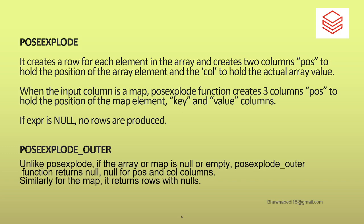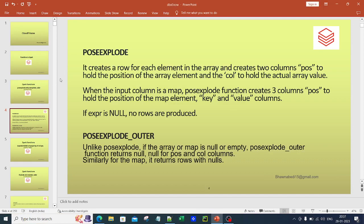In posexplode, if any expression is null — if you have no data — then it ignores it, just like explode. When you come to posexplode_outer, the functioning is similar to posexplode. Everything is the same, except that posexplode_outer keeps your null values. That is the only difference. posexplode essentially removes nulls and does not give you nulls in the output, but posexplode_outer considers nulls and gives you output with the nulls, whether it is a map data type or an array data type.